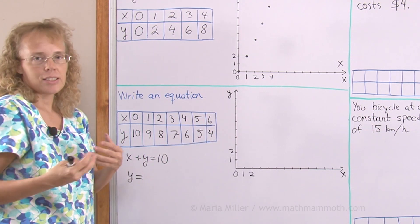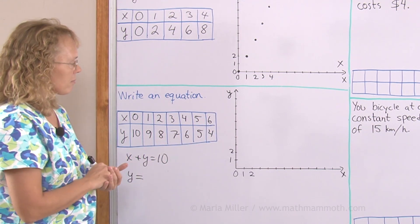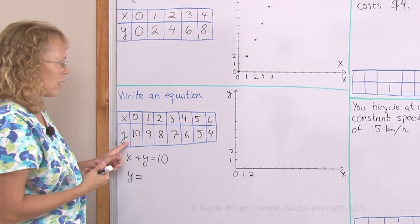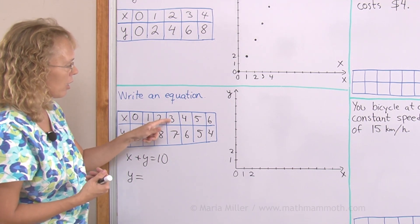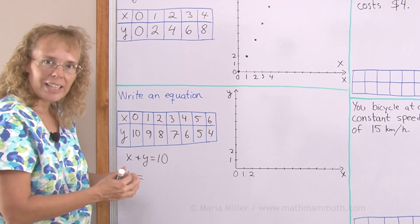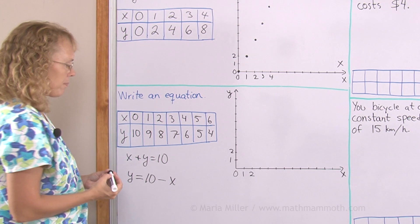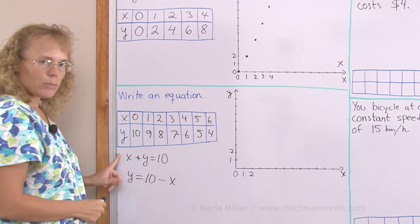If I give you x, if x is 3 and a half, how do you find y? If I give you 3, how do you get this number? You subtract from 10, right? So y would be 10 minus x. Both are correct.